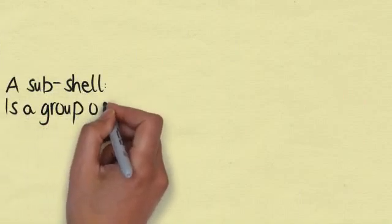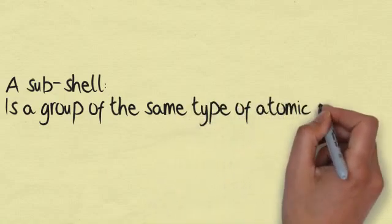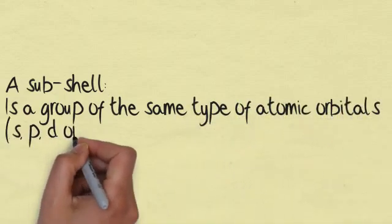A subshell is a group of the same type of atomic orbitals, s, p, d or f, within a shell.